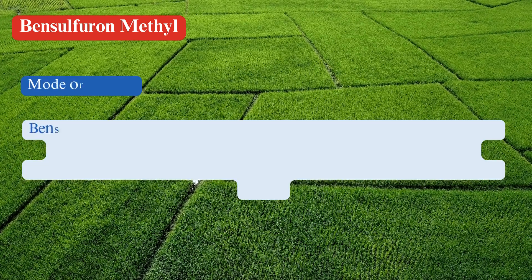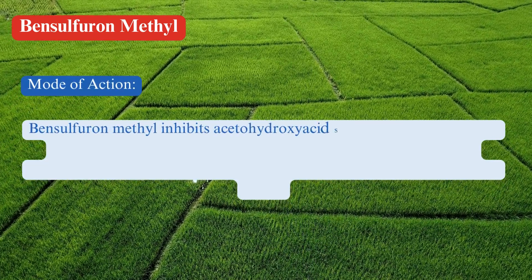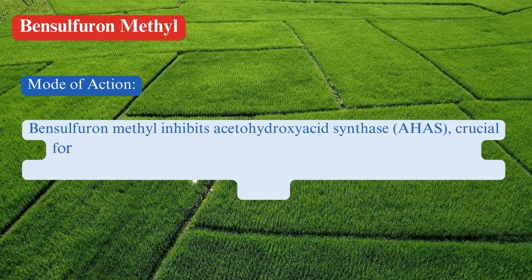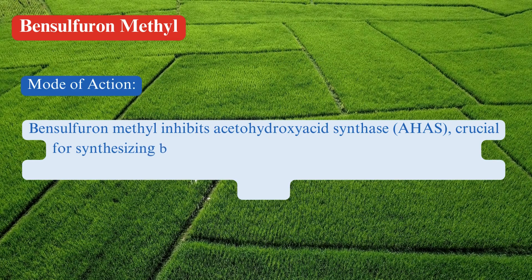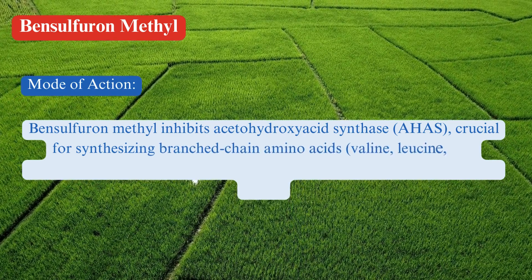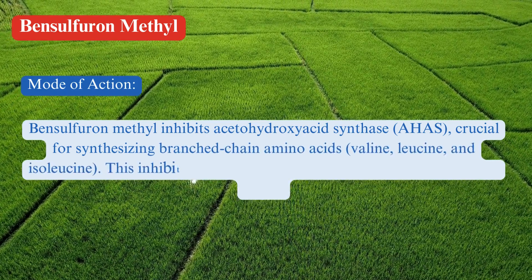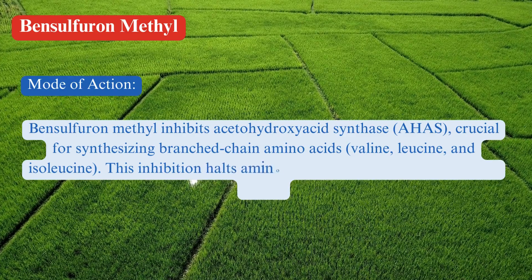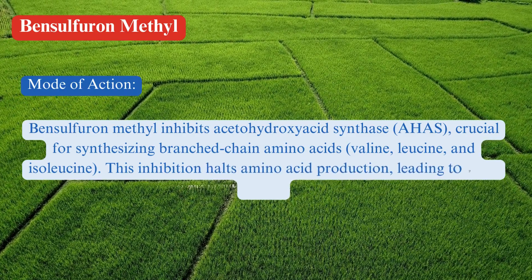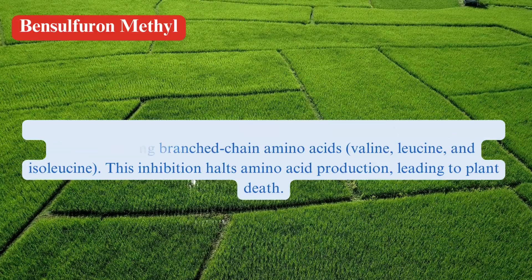Mode of action. Bensulfuron methyl inhibits acetohydroxyacid synthase (AHAS), which is crucial for synthesizing branched chain amino acids: valine, leucine, and isoleucine. This inhibition halts amino acid production, leading to plant death.